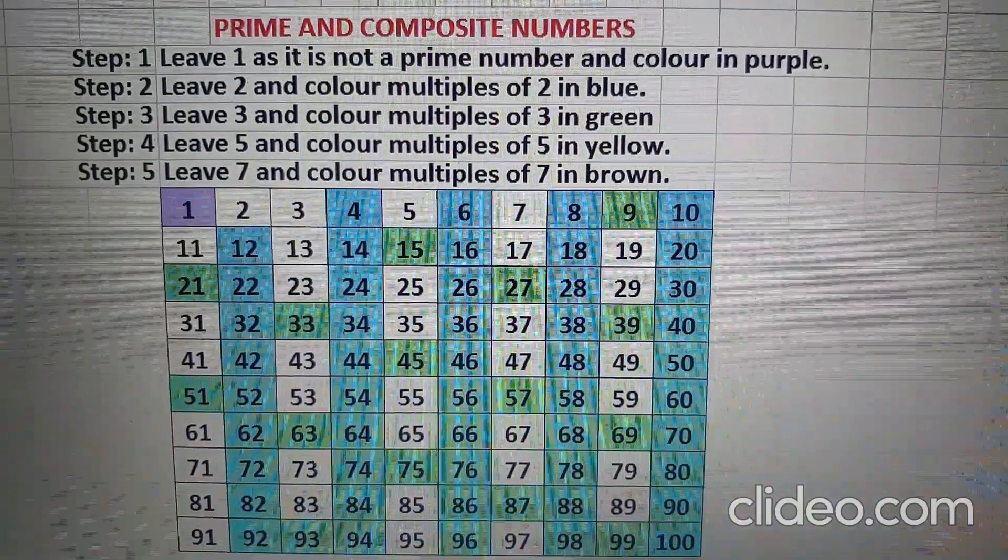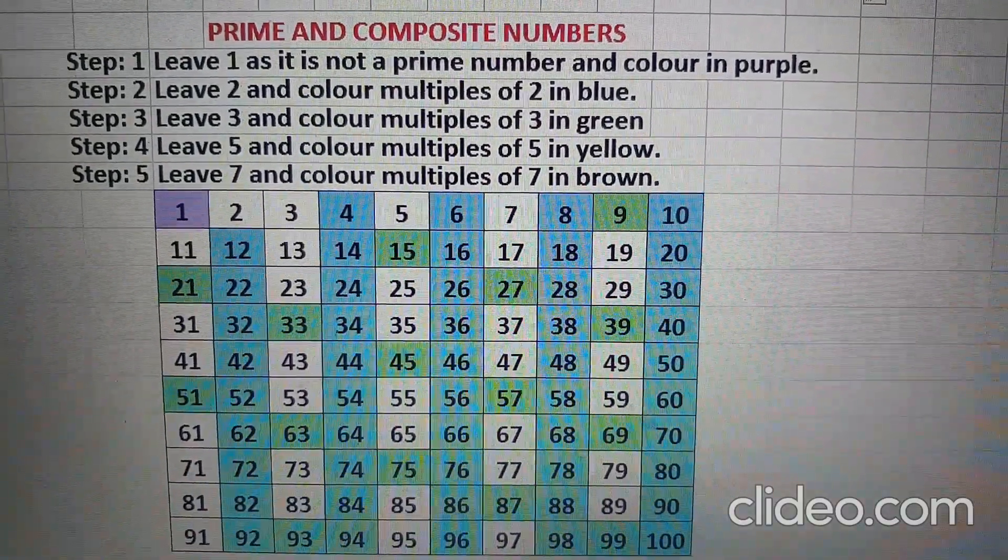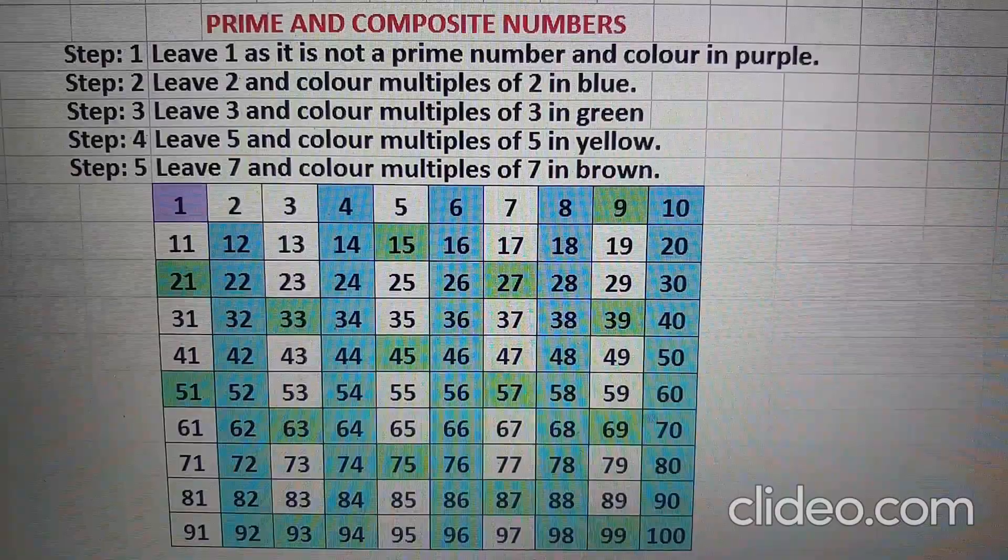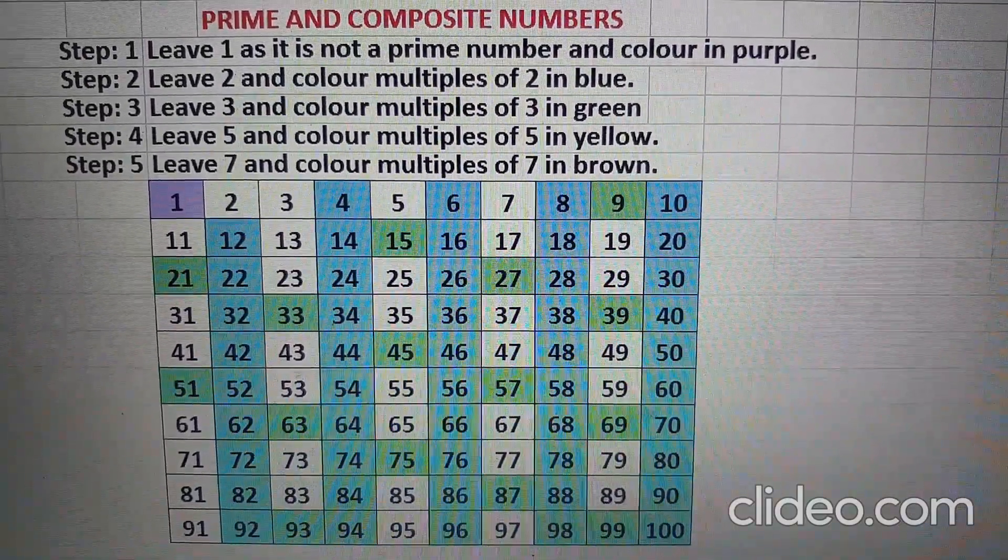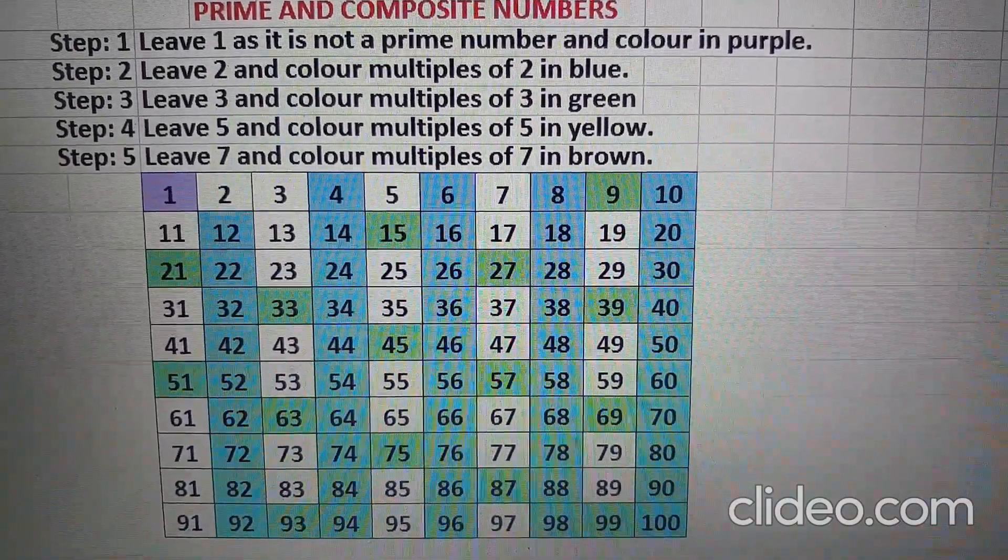Step 4: leave 5 and color multiples of 5 in yellow. Multiples of 5 are 10, 15, 20, 25, 30, and so on.